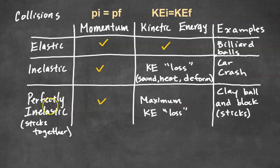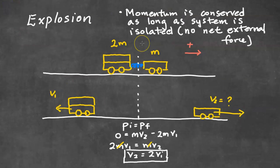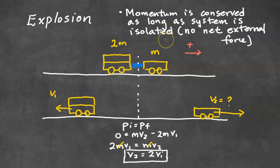In a perfectly inelastic collision, the two objects stick together. Momentum is still conserved — the initial total momentum equals the final total momentum — but there is maximum kinetic energy loss. An example would be a clay ball hitting a block; they hit and stick together. Next, in an explosion, internal forces move objects in the system apart. Here we have a spring and two carts in our system. Momentum is conserved as long as the system is isolated, meaning there are no net external forces — we're assuming no friction.